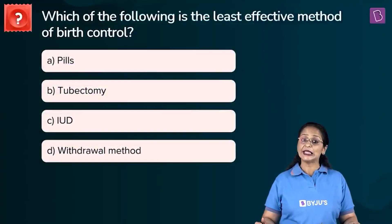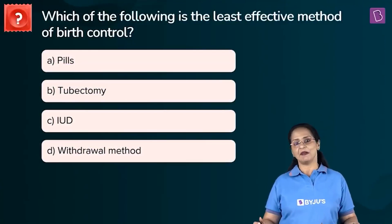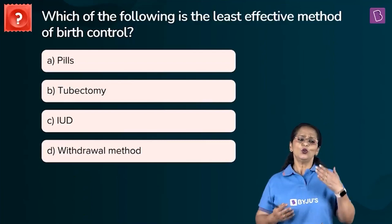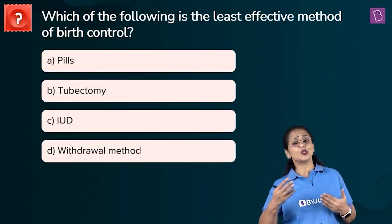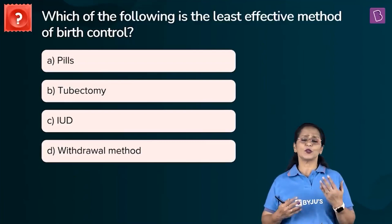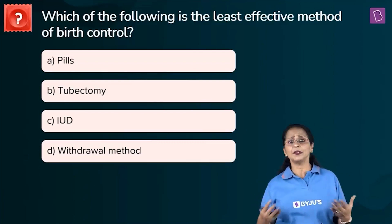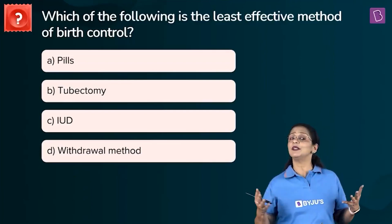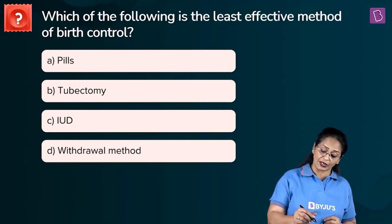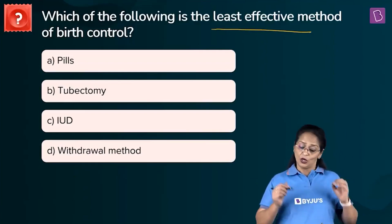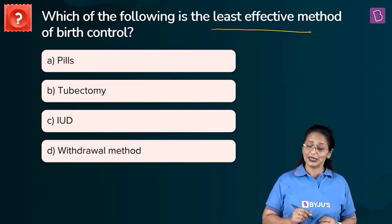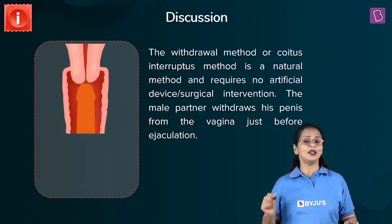New question: which of the following is the least effective method of birth control? a) Pills, b) tubectomy, c) IUD, or d) withdrawal method. Birth control methods are adopted to avoid unplanned pregnancies or to space or delay pregnancies. Among pills, tubectomy, IUD, and the withdrawal method, we need to identify which is least effective — meaning chances of pregnancy are high despite using it.